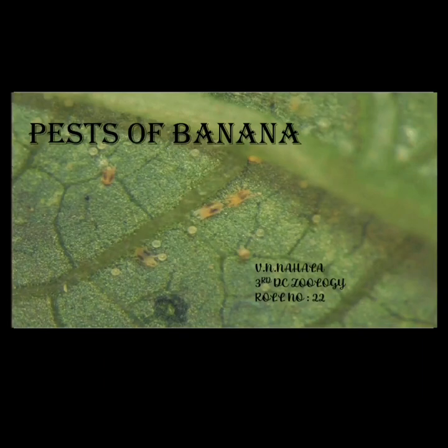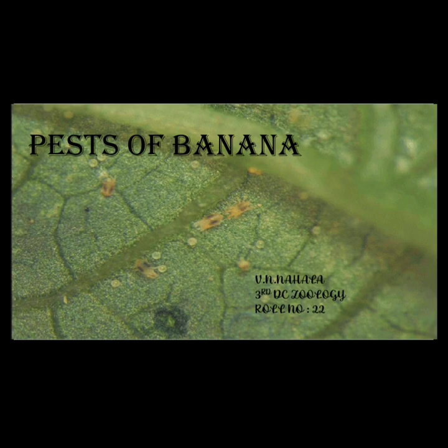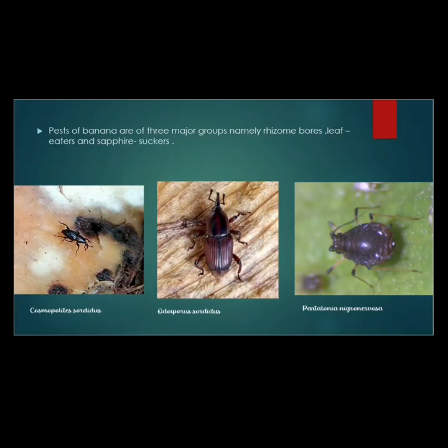Hello everyone, today I am going to discuss about pests of banana. Pests of banana are of three major groups, namely rhizome borers, leaf eaters, and sap suckers.